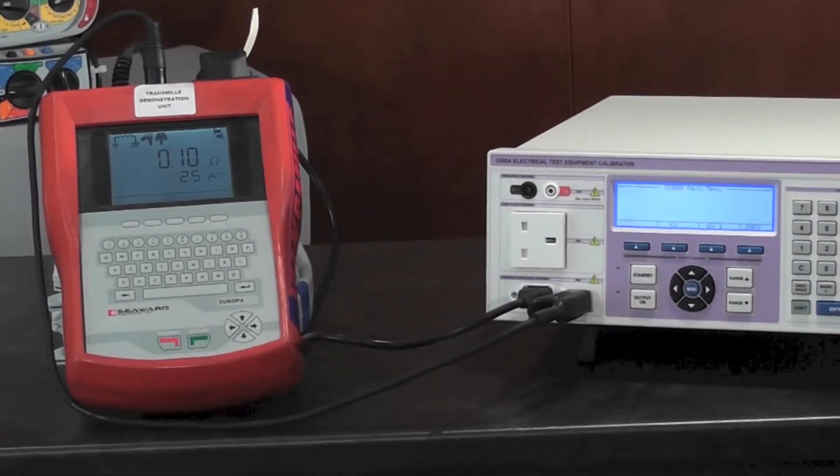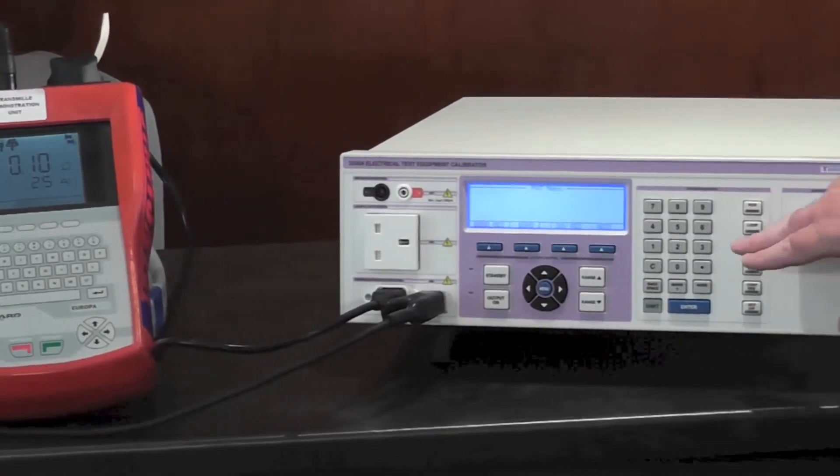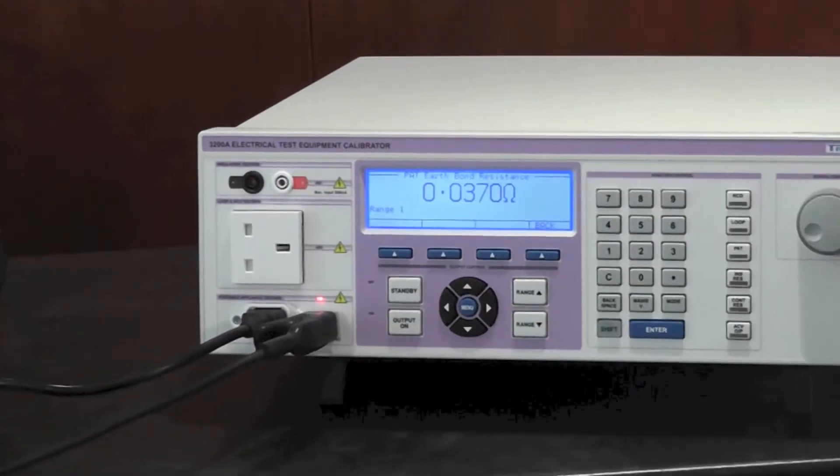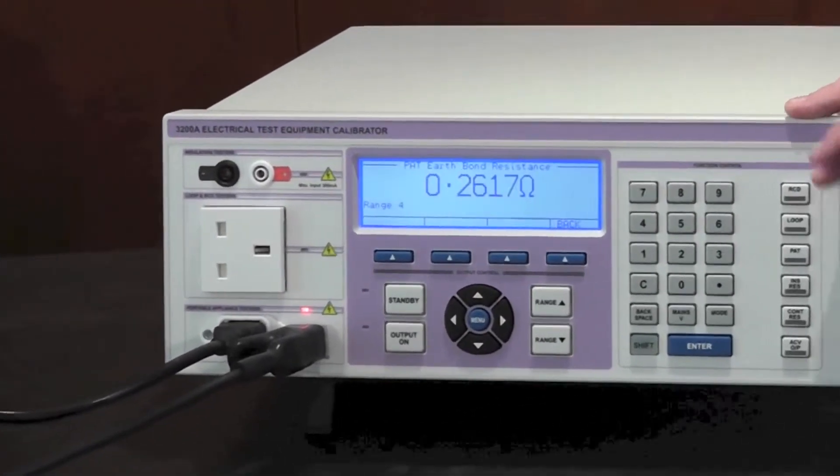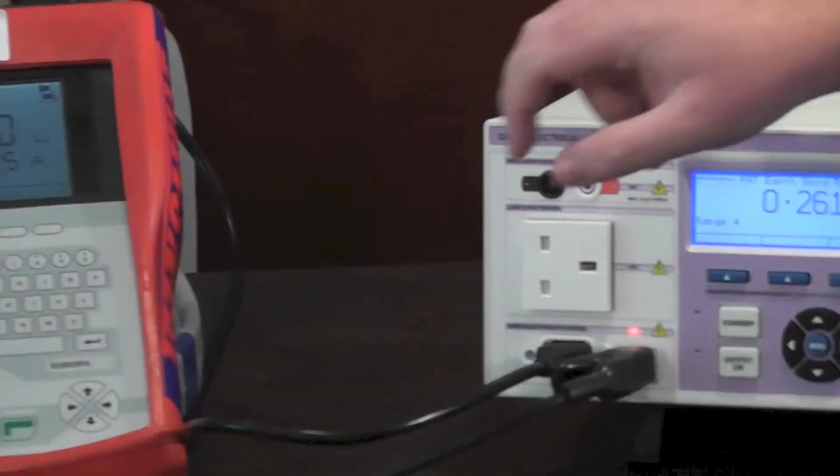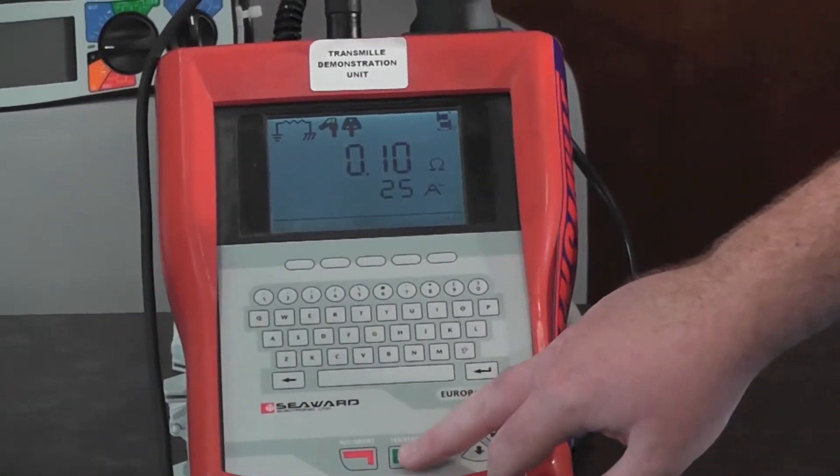I will now enter the PAT mode, select bond resistance as required, select the range using the digital control or the range up and down keys, and then press test on the tester.